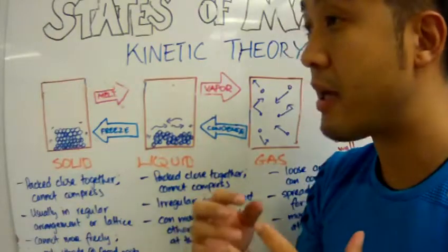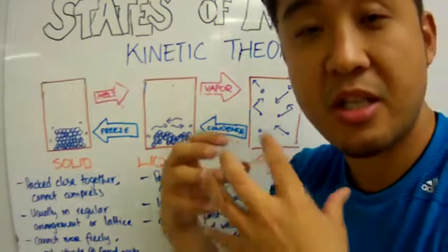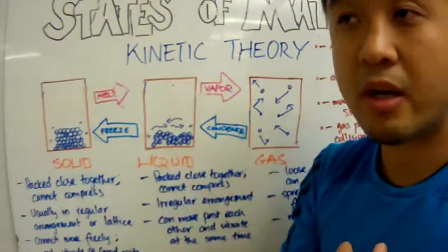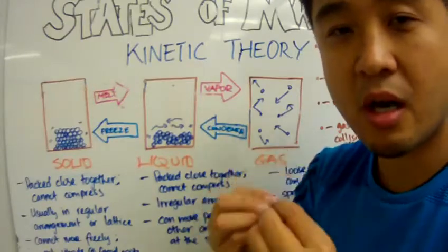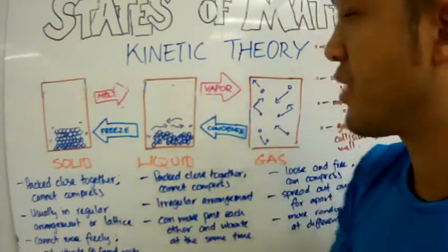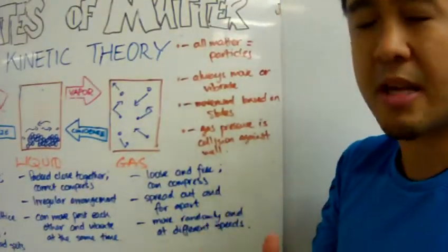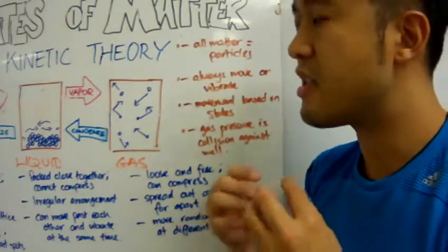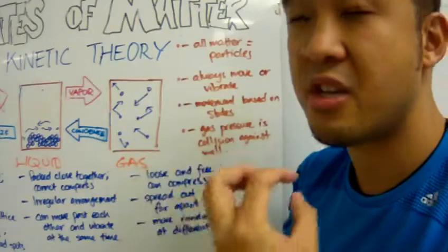In order to explain what is going on when something is a solid, to explain what is going on when something is a liquid, and to explain what is going on when something is in a gaseous state. Now kinetic theory makes a few assumptions and we need to take these assumptions into consideration when we talk about kinetic theory.